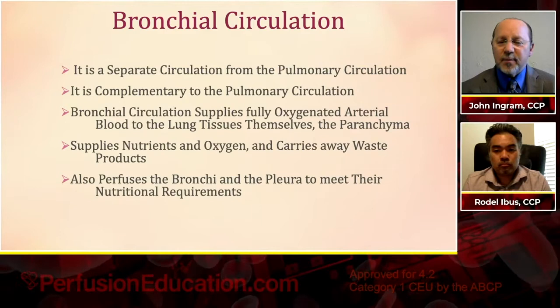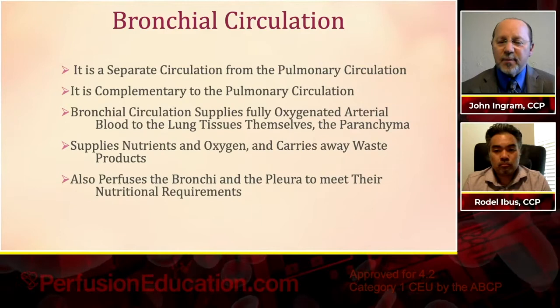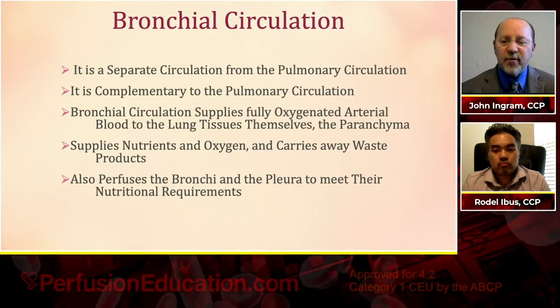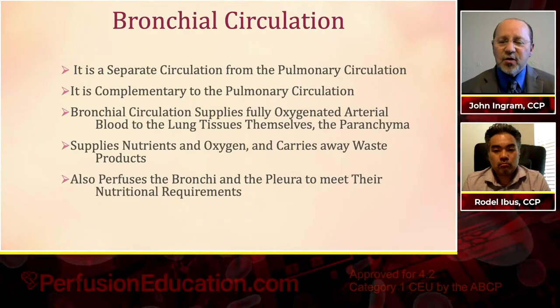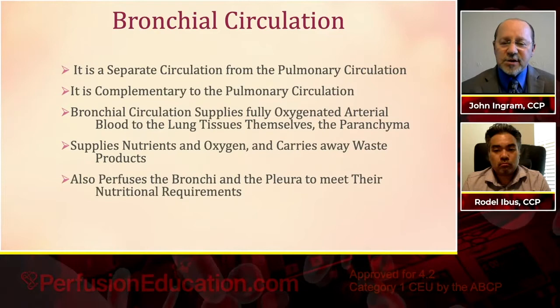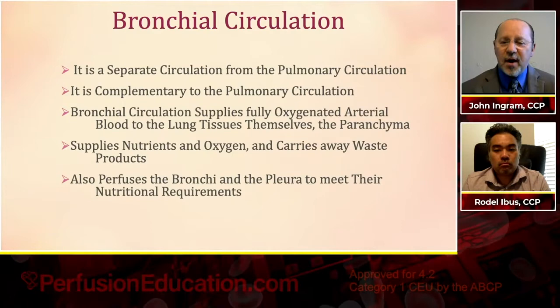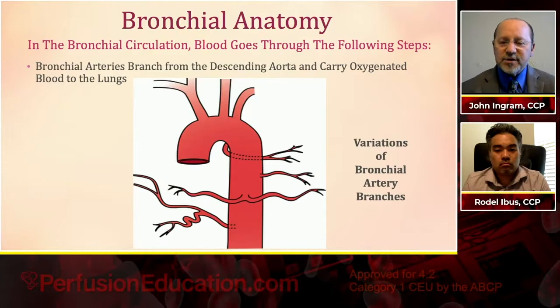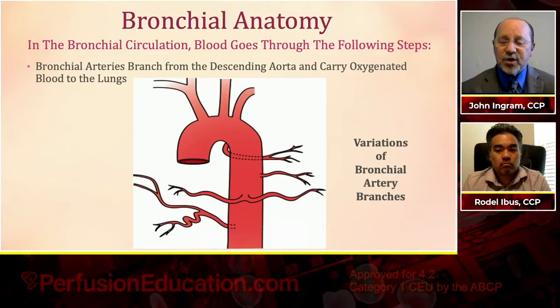Now let's talk about the bronchial circulation. It is a completely separate circulation from the pulmonary circulation, but complementary to it. The bronchial circulation supplies fully oxygenated arterial blood to the lung tissues themselves — the parenchyma. It supplies nutrients and oxygen, carries away waste products, and perfuses the bronchi and pleura to meet their nutritional requirements. So we have two circulations: the pulmonary circulation — the functional unit of the lung oxygenating our blood — and the bronchial circulation, which perfuses the lung tissue itself.